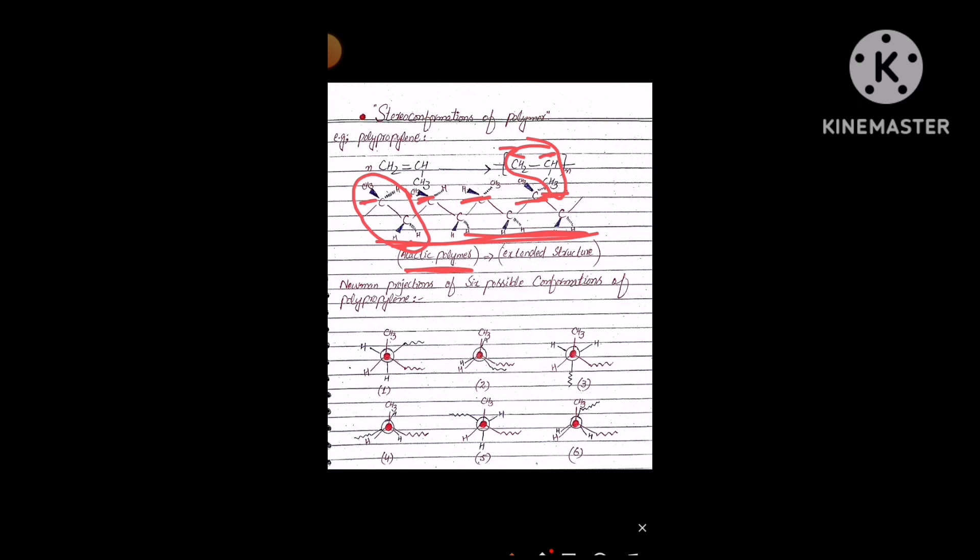In terms of stereoconformation, we will discuss this polymer using the Newman projection formula. There are six possible conformations that polypropylene can take. Why six? Because in a full circle of 360 degrees, if we rotate every 60 degrees, six possible conformers can occur.